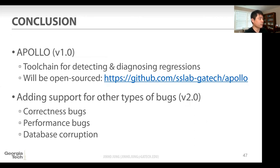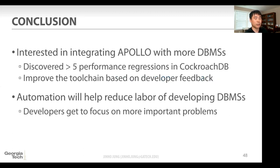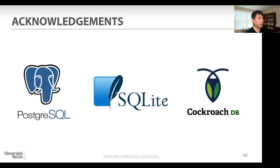In the current version of Apollo, we provide a toolchain for detecting and diagnosing regressions, and we are also working on making it open source soon. We are also working on the next version to discover other types of bugs, such as correctness bugs, performance bugs, data corruption, and crashes. We are interested in integrating our system into more DBMS — we discovered five more performance regressions in CockroachDB. Our automation will help reduce the labor of developers so they can focus on more important problems. We thank Postgres, SQLite, and CockroachDB for providing valuable feedback, and CMU for inviting us to present.